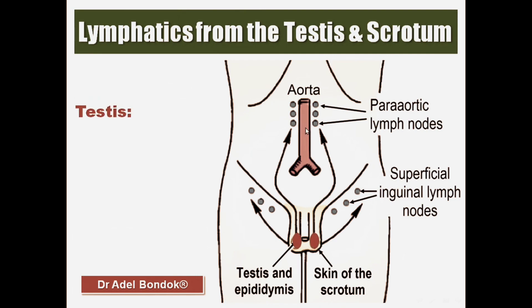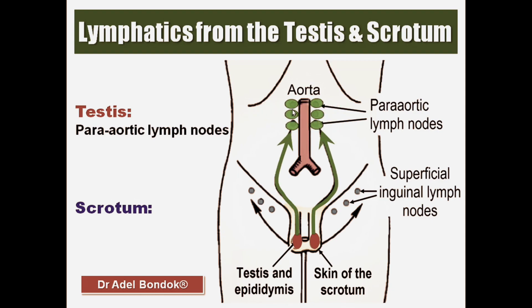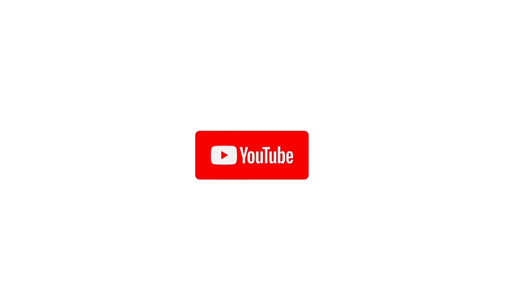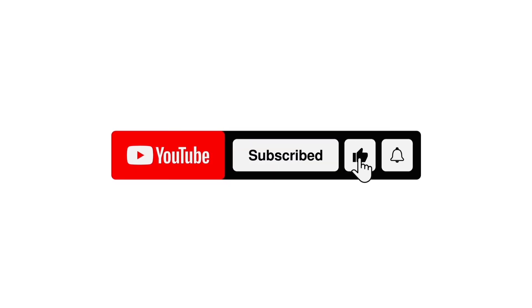Finally, lymphatics from the testis and the epididymis drain into the para-aortic lymph nodes. Lymphatics from the scrotum drain into the superficial inguinal lymph nodes.